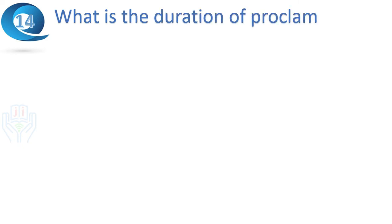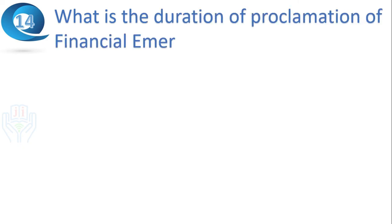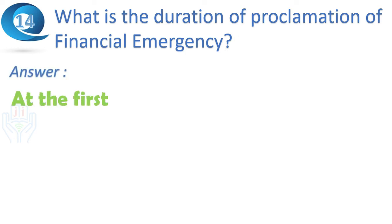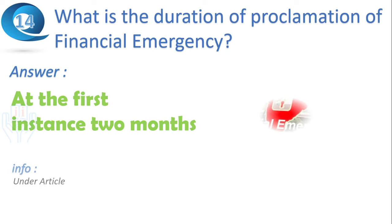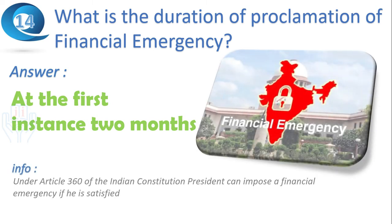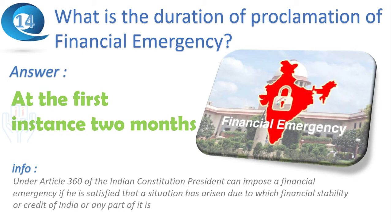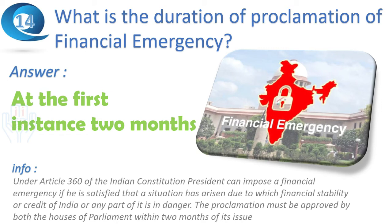Next question: what is the duration of proclamation of financial emergency? Answer: at the first instance, two months. Under Article 360 of the Indian Constitution, the President can impose a financial emergency if satisfied that a situation has arisen due to which the financial stability or credit of India or any part of it is in danger. The proclamation must be approved by both houses of Parliament within two months of its issue.